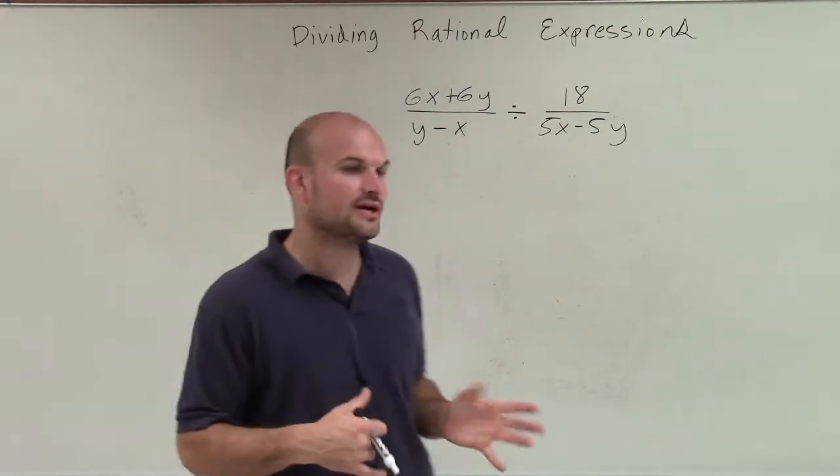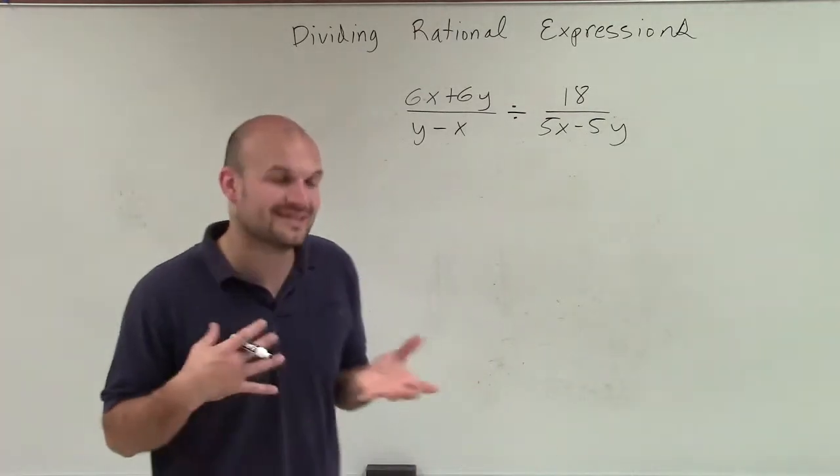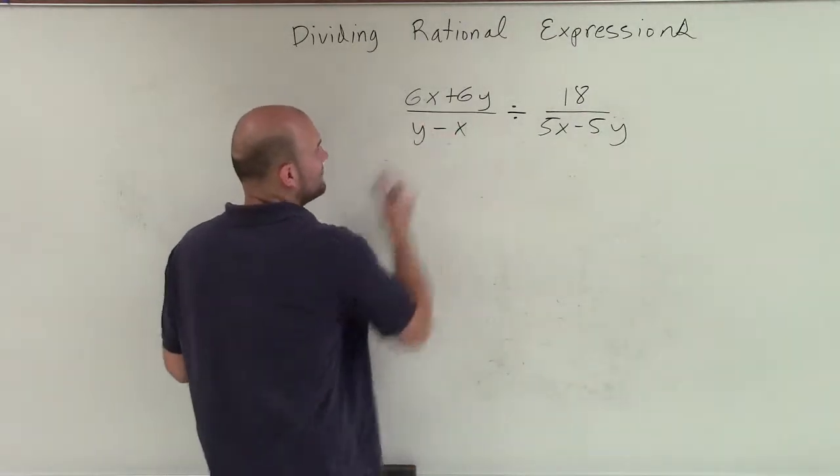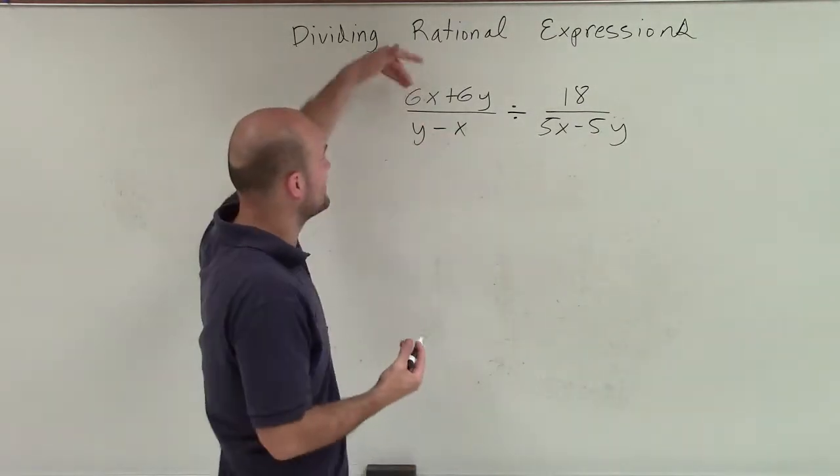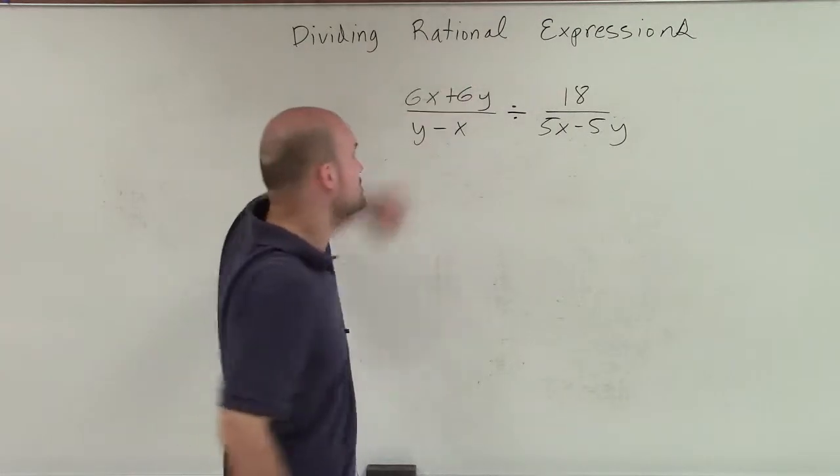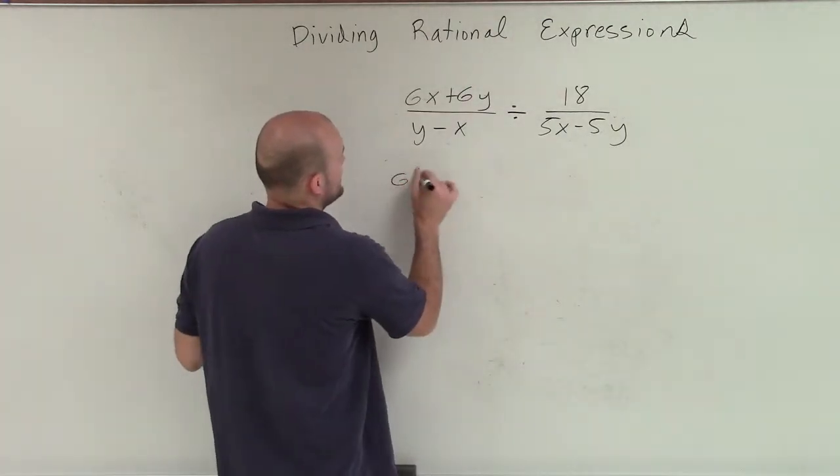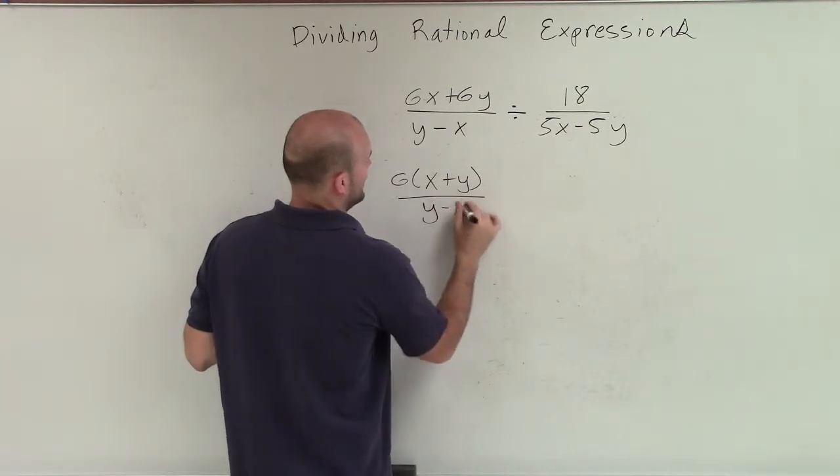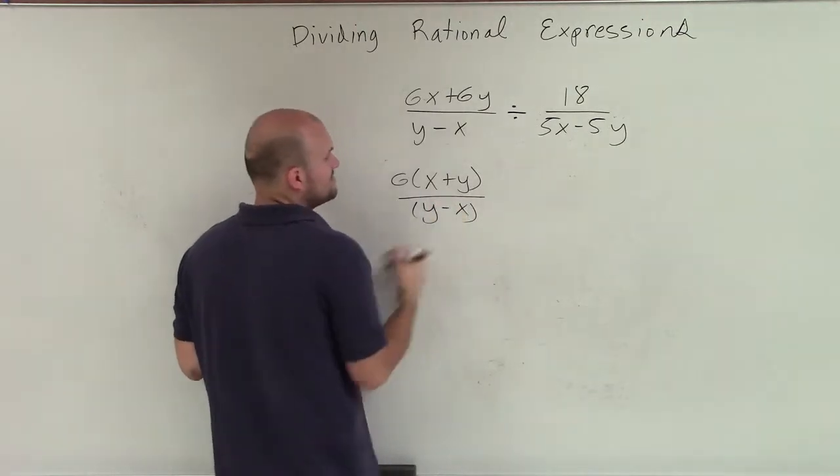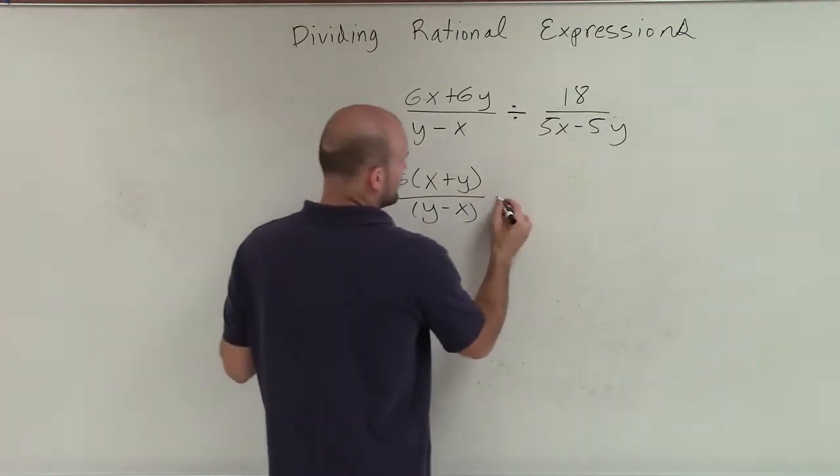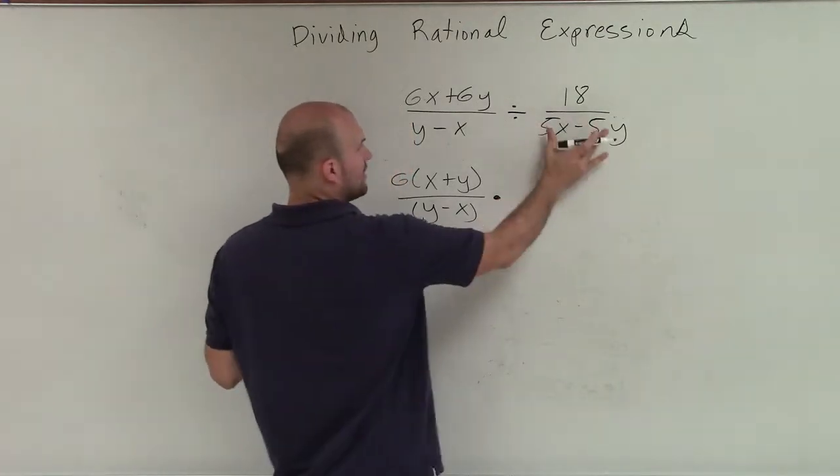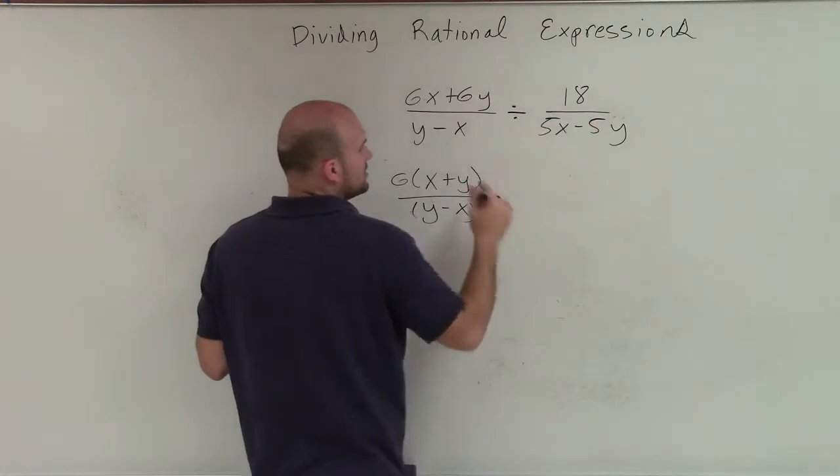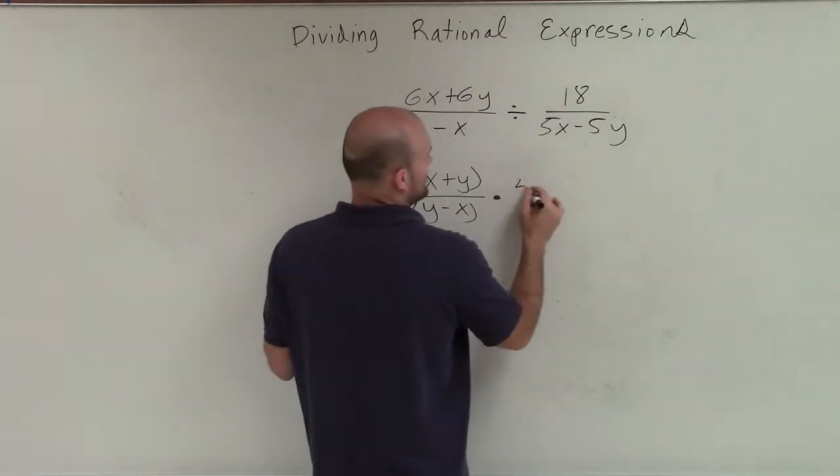So I'm actually going to do a quick little work here. I'm actually going to simplify and reciprocate kind of in the same term. So here, I can factor out a GCF. This is a binomial, but I see that they both share a 6. So I'm going to factor out a 6. I'm going to have (x + y) divided by (y - x). Now, these are not the exact same terms, so I cannot simplify them. But I'm going to change this now, multiply this to the reciprocal. So I'm going to flip this fraction. And then also, I notice that these both share a 5, so I'm going to factor out a 5.